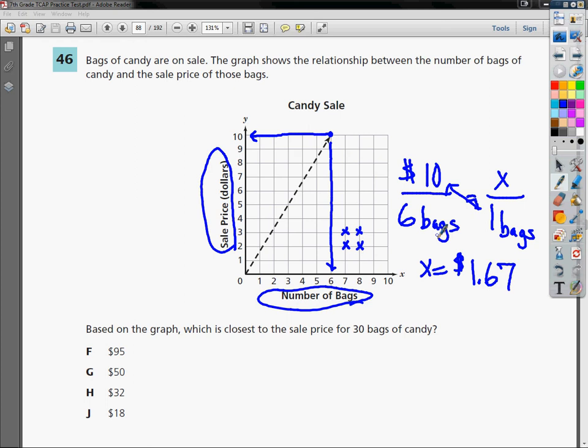But I want to know what the price for 30 bags is. So I can use that information, which is conveniently placed, and convert it using this $1.67 that I've created. So I have $1.67 for one bag, so I'm going to multiply that times 30 bags. If I do that, it helps if you didn't retype in $1.67, and you kept the original 1.6 repeating on your calculator. You multiply that times 30, and you end up with $50. So our answer is G.